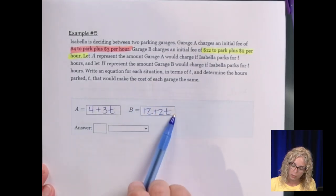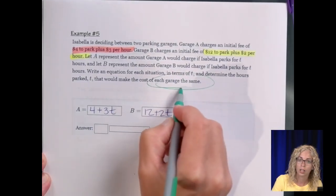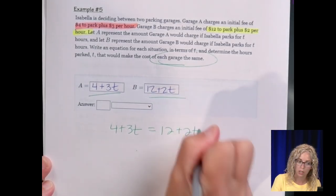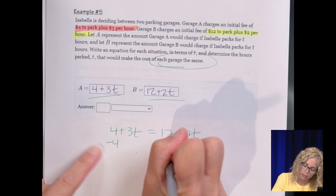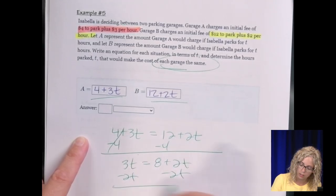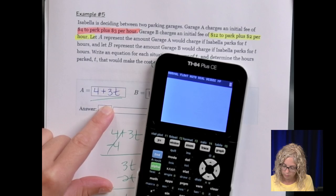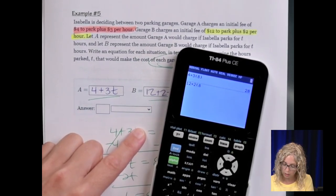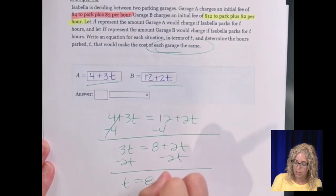We need to write an equation for each situation, which we did, and then, in terms of T, determine the number of hours parked that would make the cost the same. So what we do is we set this equal to this. So $4 plus $3t equals $12 plus $2t. So then let's solve for T. I'm going to subtract $4. So we get $3t equals $8 plus $2t. Subtract $2t. And we have a time of $8. So let's just check, $4 plus $3 times $8 is $28. And then $12 plus $2 times $8 is $28. It works. So the answer, determine the number of hours, 8 hours.